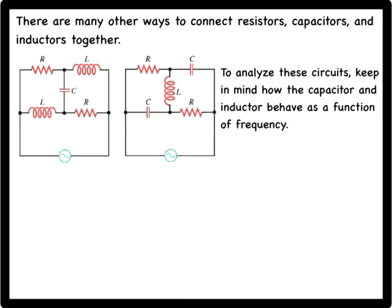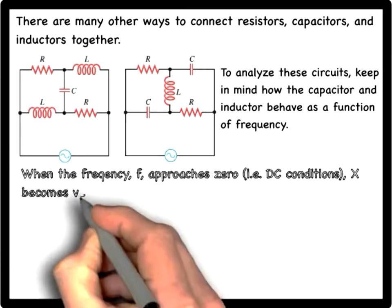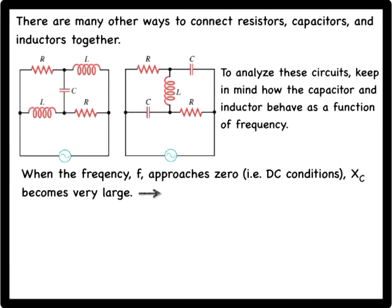When the frequency approaches zero, that is DC conditions, the reactance of a capacitor becomes so large that no charge can flow through the capacitor. It is as if the capacitor were cut out of the circuit, leaving an open gap in the wire.